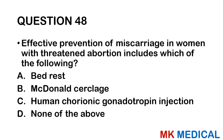Question forty-eight: Effective prevention of miscarriage in women with threatened abortion includes which of the following? A, bed rest; B, McDonald's cerclage; C, human chorionic gonadotropin injection; D, none of the above. Most of you are going to guess bed rest, but what we have realized is that nothing is effective in preventing threatened abortion. If it's going to happen it will progress, so the answer is none of the above.